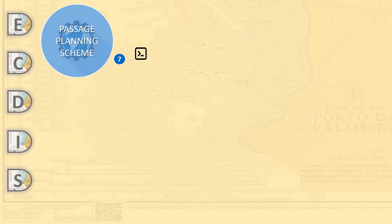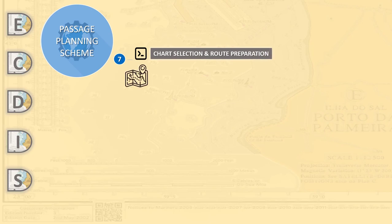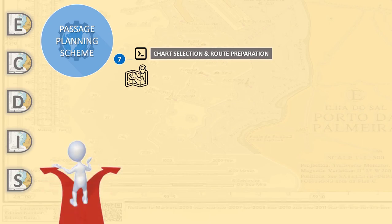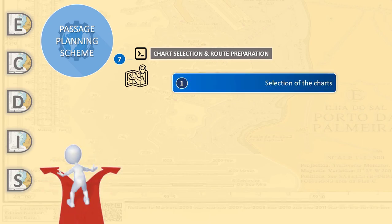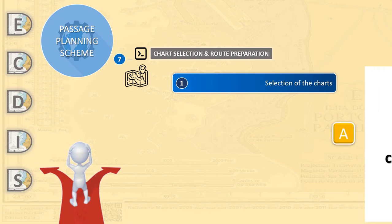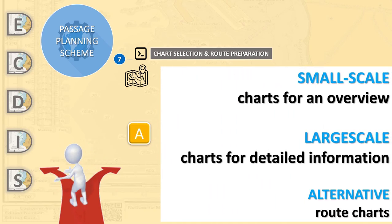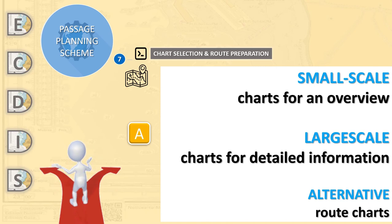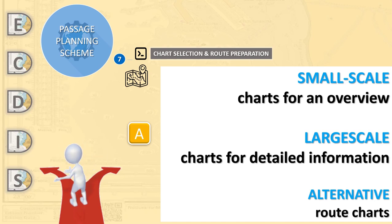Chart selection is a very important process on board the vessel. Each part of the passage must be covered by small-scale charts for an overview and the largest-scale charts for detailed information. Depending on the company procedures and the master's orders, it is not only the charts relevant to the voyage that may be required. Charts for areas and ports which may become relevant in case of an emergency or deviation could also be required.